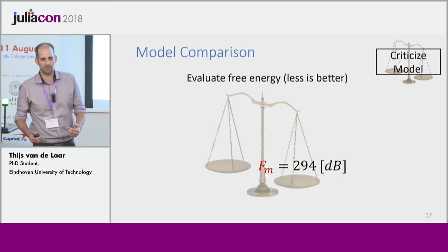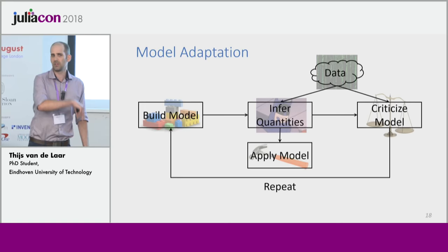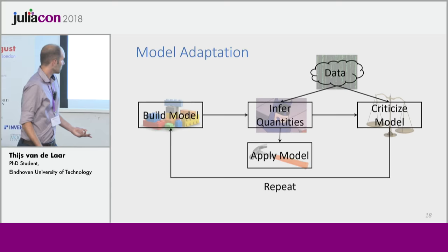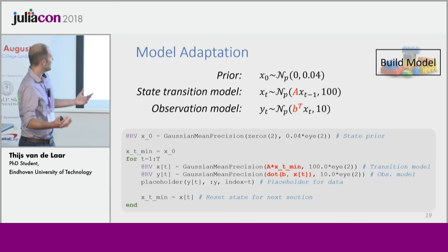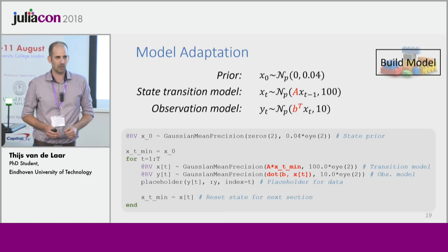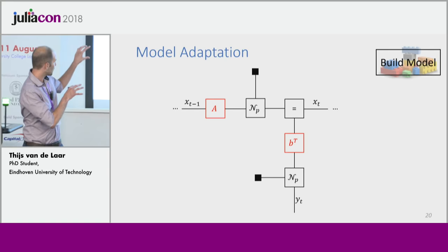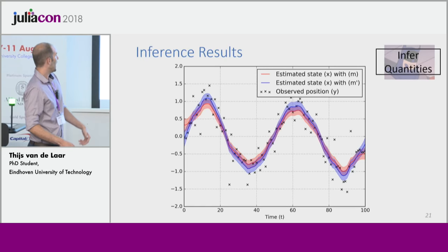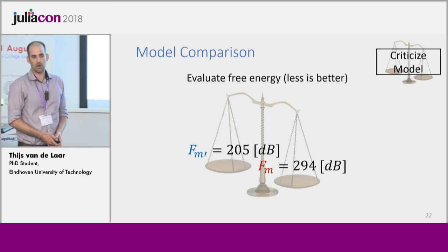We go back to our model design cycle and repeat the process. As you might have noticed, there was a kind of periodicity in the data, so let's try to incorporate that into our model. We adjust our code, introducing a rotation matrix A. As a nice detail, this multiplication operation has been overloaded — it's a matrix times a random variable — which under the hood just adjusts the factor graph and introduces extra nodes. We rebuild our algorithm and end up with the blue line. We rebuild our free energy algorithm and get a new number, 205, which is significantly lower than before. This new model becomes the reference and we can try again until we're satisfied.